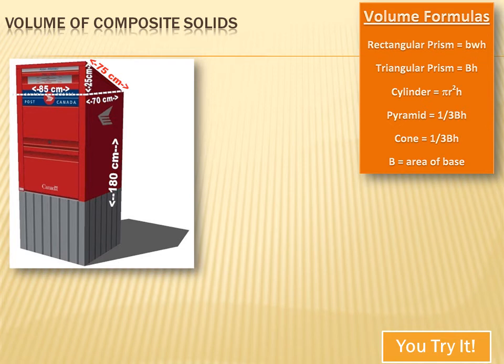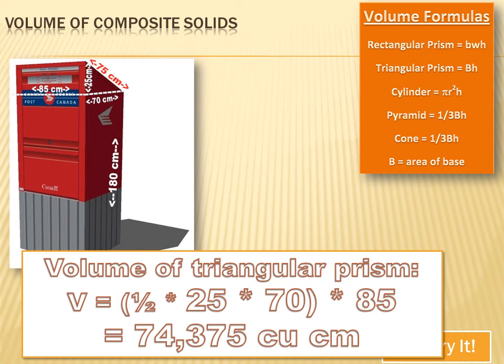Well, this composite solid is a rectangular prism with a triangular prism sitting on top of it. And I can tell that because I've got two parallel bases on either side. You can't see that one, but they're both going to be triangles. So, it's a triangular prism. Now, I need to get the volume of the rectangular prism and add it to the volume of the triangular prism. The volume of the triangular prism is the area of the base times the height. The base is one-half times 25 times 70, and the height is 85. So, the volume of the triangular prism is 74,375 cubic centimeters.